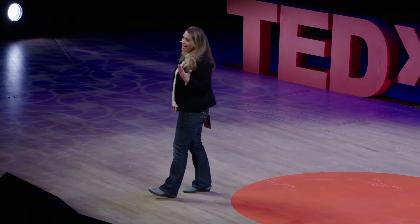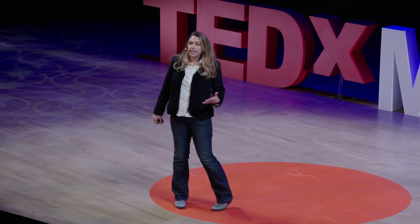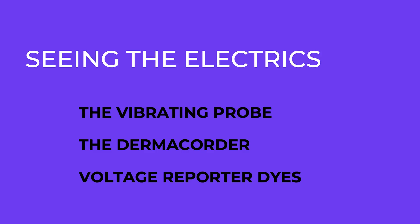After the patch clamp starts telling us a little bit about how to visualize our electrics, we start developing a whole suite of other tools. My favorite one is the vibrating probe. This is kind of like the patch clamp you can use on individual cells, but it doesn't just tell you about action potentials on nerve cells — it tells you about the very subtle electric fields that emanate from all cells. That starts to give us some solutions to the mystery of galvanotaxis, because if all cells are electric, it makes sense that they would interact with an electric field.